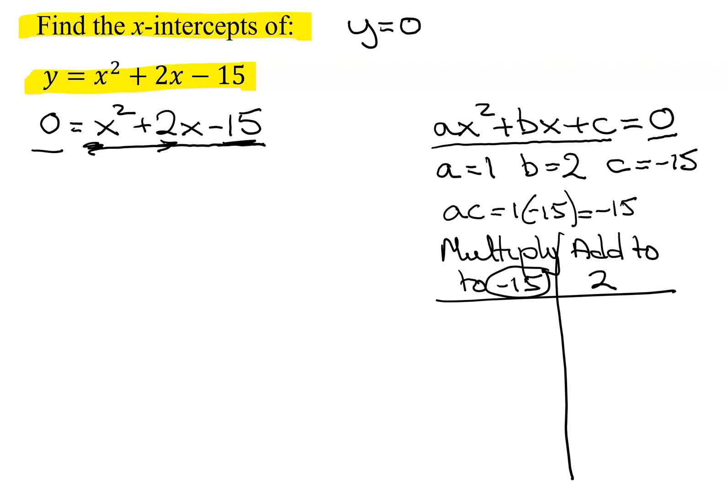Multiply to a negative, the signs are different. Add to a positive, the bigger number has to be the positive number. I could have negative 1 times 15. Those definitely multiply to negative 15. Negative 1 plus 15, that doesn't give me what I want, because that adds up to 14. Does 2 divide into 15? No. Does 3 divide into 15? Yes. Negative 3 times 5 is negative 15, and negative 3 plus 5 equals positive 2. Is that the number I'm looking for? Yes.